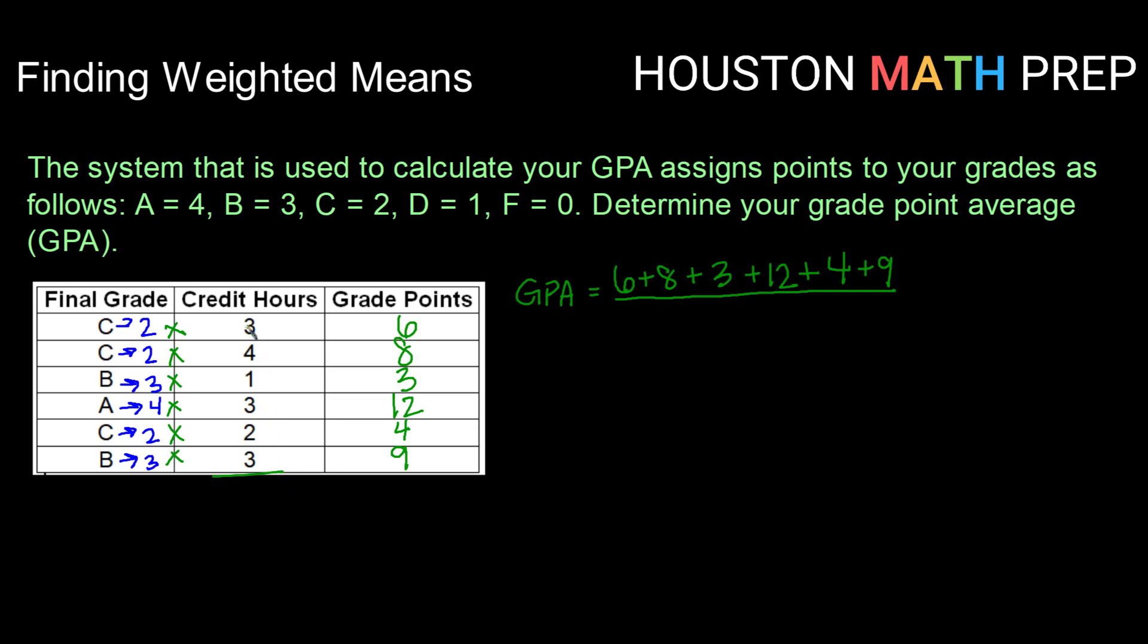So if I were to add those up, 3 plus 4 gives me 7, plus 1 is 8, plus 3 is 11, plus 2 is 13, plus 3 is 16. So I'm going to divide by my total number of credit hours, which is 16.